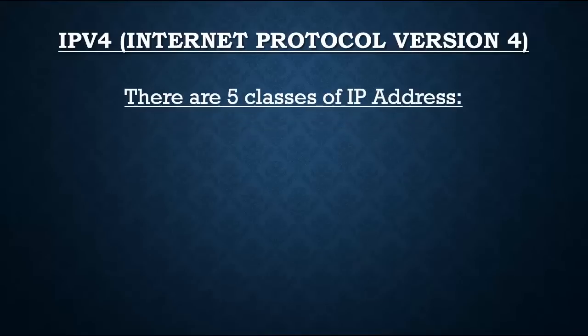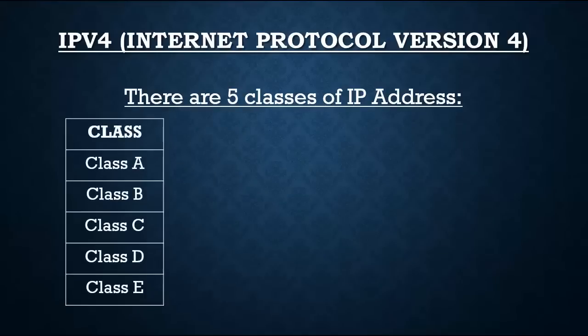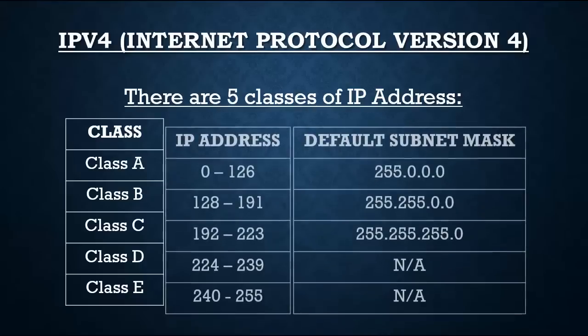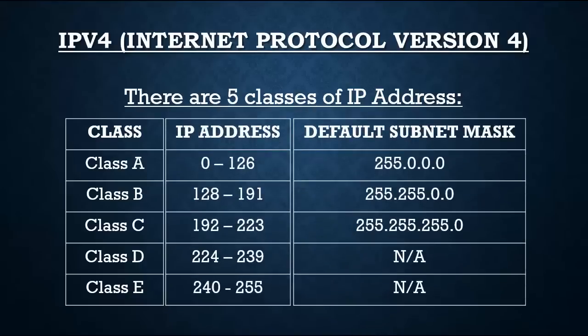There are five classes of IP address in IP version 4: Class A, Class B, Class C, Class D, and Class E. Let's discuss the ranges of IP address assigned to each class.